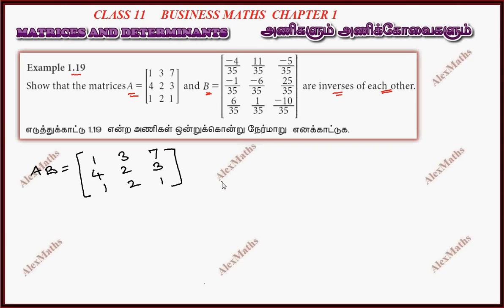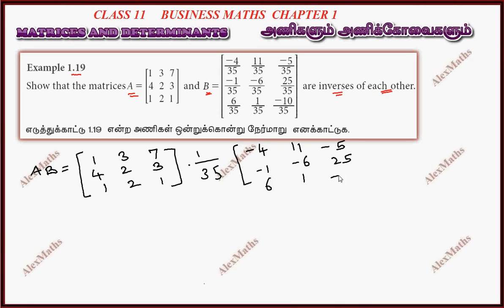Matrix B equals 1 by 35 times the matrix: first row 10, minus 4, 11, minus 5; second row minus 1, minus 6, 25; third row 6, 1, minus 10.